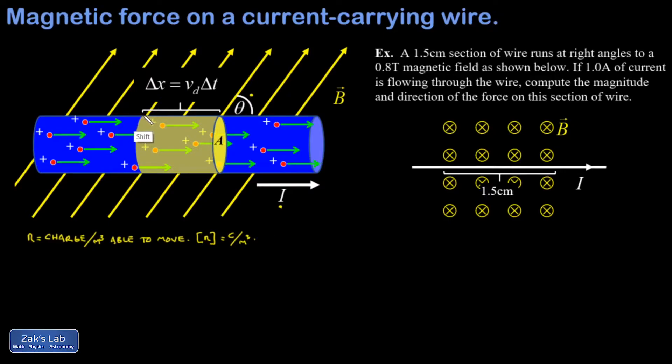So we allow a time of delta T to go by, and we watch all the charge passing this point in the wire. And the charge that passes that point traces out a cylinder. So the goal here is to find the volume of that cylinder, and then we can find out how much charge has passed in a time of delta T.